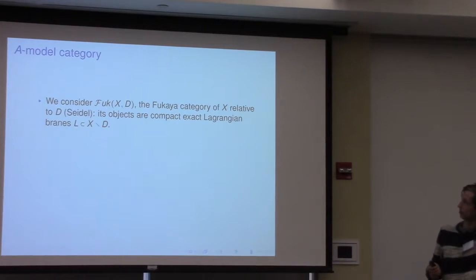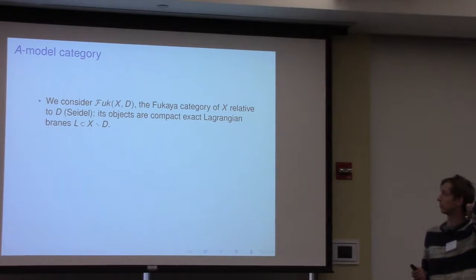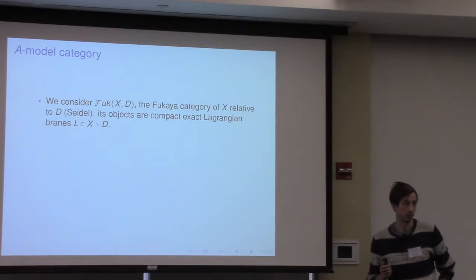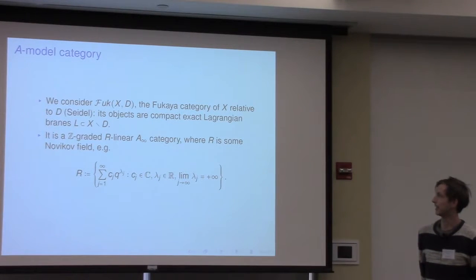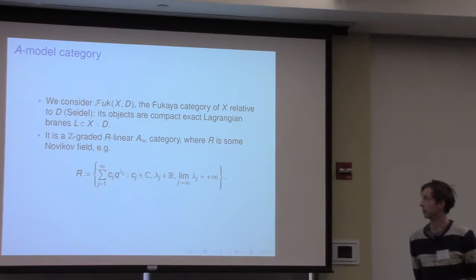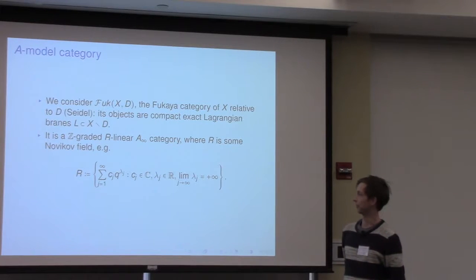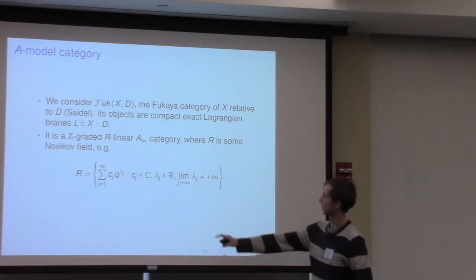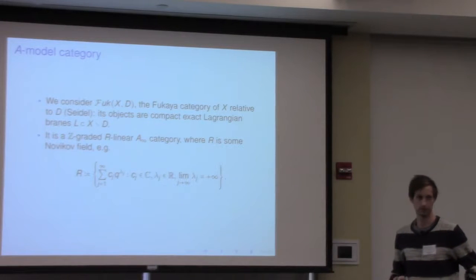The symplectic form omega is going to be exact on the complement of D, and convex at infinity — so you can think about omega being the curvature of a metric on the line bundle corresponding to the divisor D, for example. That's the geometric data. And the coefficient field throughout the talk is the universal Novikov field of ℂ: formal sums of a Novikov parameter Q with complex coefficients, real powers tending to plus infinity.